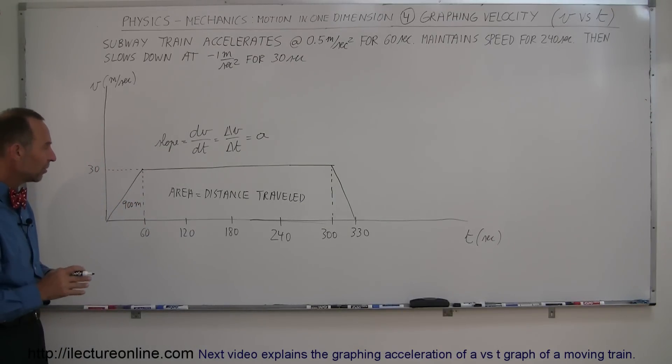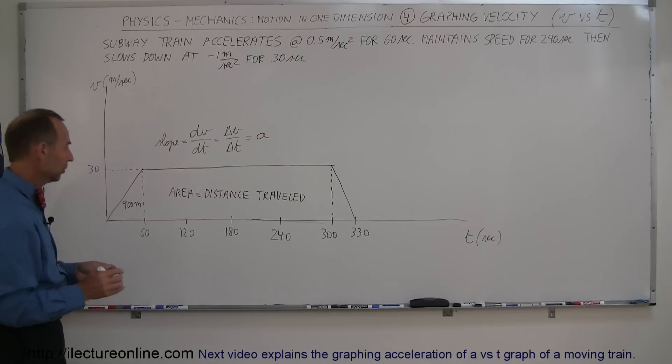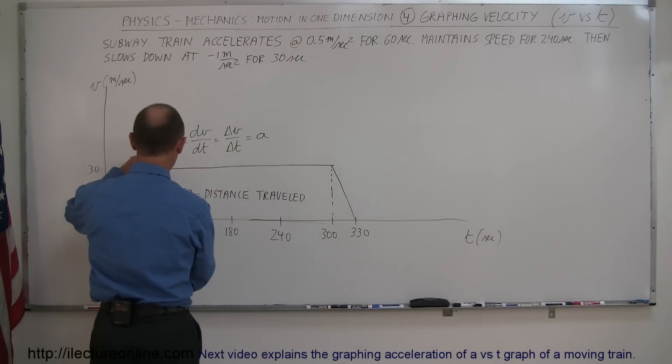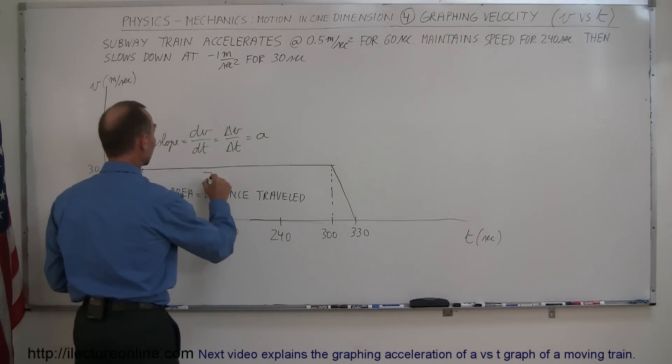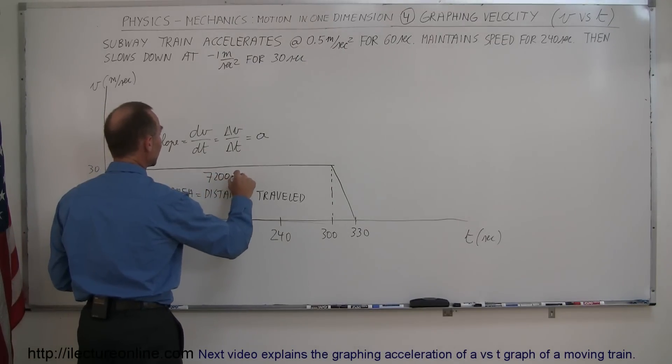Then in the next 240 seconds, how far does it travel? Well, it's a rectangle, so it's height times width, 30 high, 240 wide. So the total there is 7,200 meters.